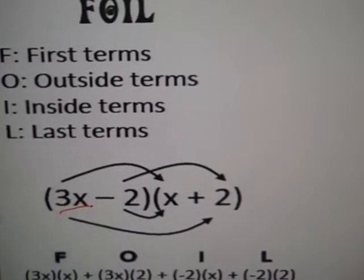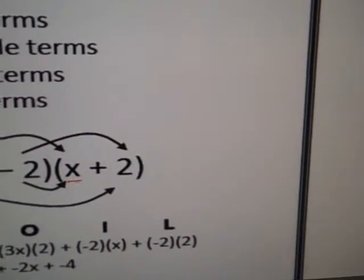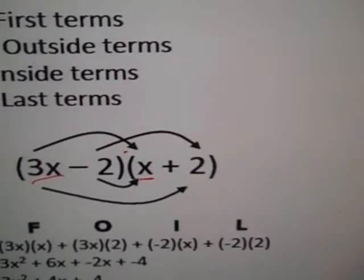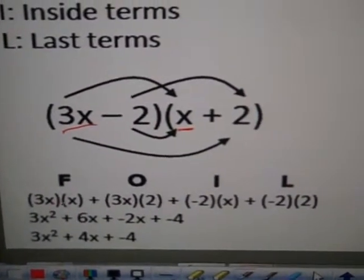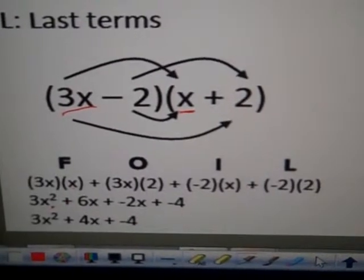The first term is 3x over here, the first term is x over here. Those are the ones I multiply first, 3x and x. I get 3x times x and that is 3x squared.